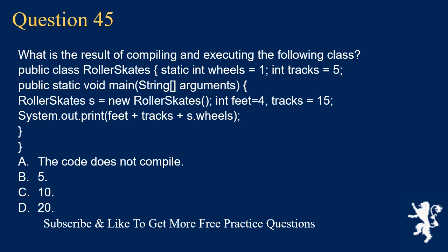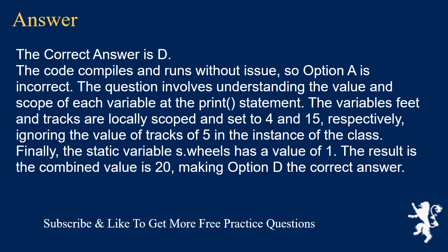Question 45: What is the result of compiling and executing the following class? Public class RollerSkates, static int wheels = 1, int tracks = 5, public static void main(String[] arguments) { RollerSkates s = new RollerSkates(); int feet = 4; int tracks = 15; System.out.print(feet + tracks + s.wheels); }. Options: A) does not compile, B) 5, C) 10, D) 20. The correct answer is D. The locally scoped variables feet and tracks are set to 4 and 15 respectively, ignoring the instance value of tracks of 5. The static variable s.wheels has a value of 1. The result is 4 + 15 + 1 = 20.